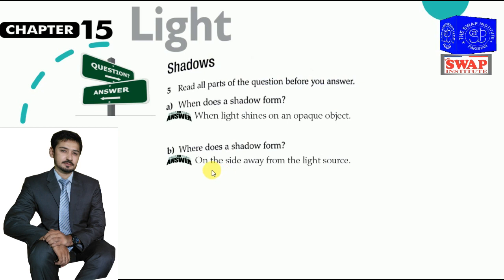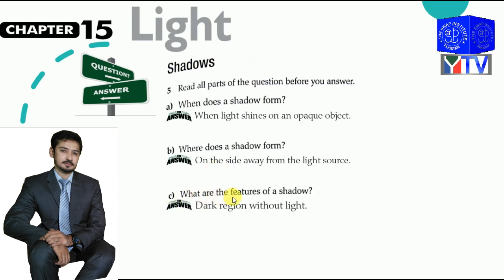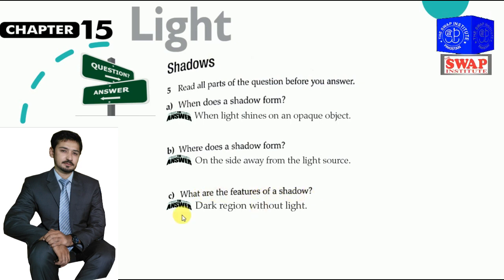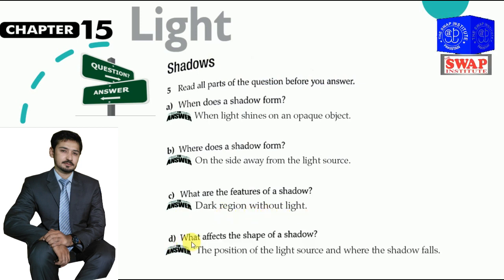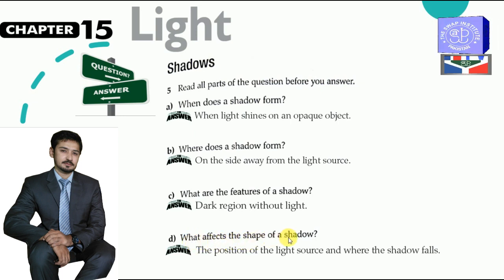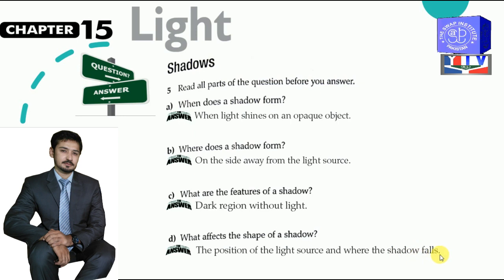The third part: what are the features of a shadow? Answer: a dark region without light. But what affects the shape of a shadow? The answer is the position of the light source and where the shadow falls.